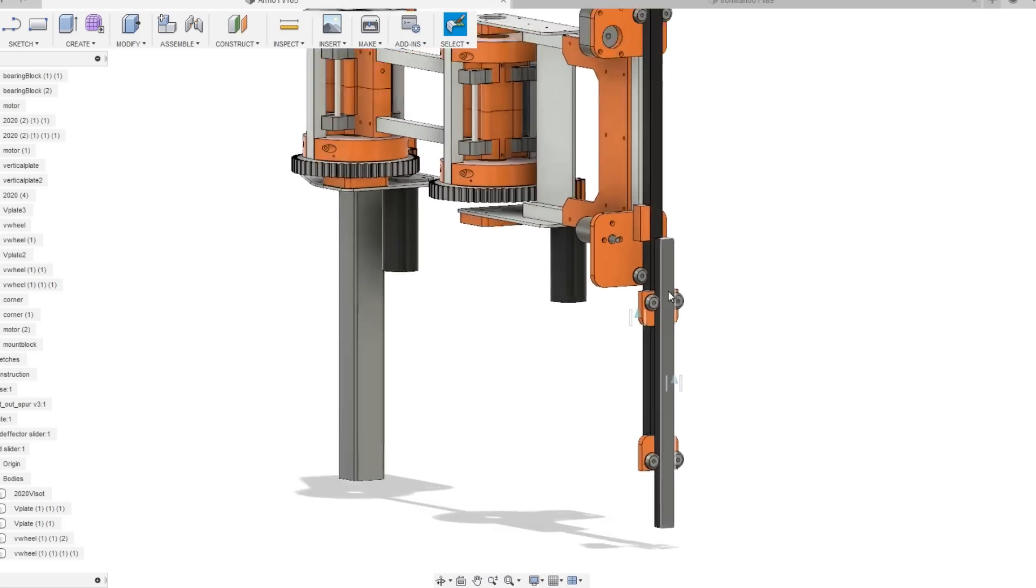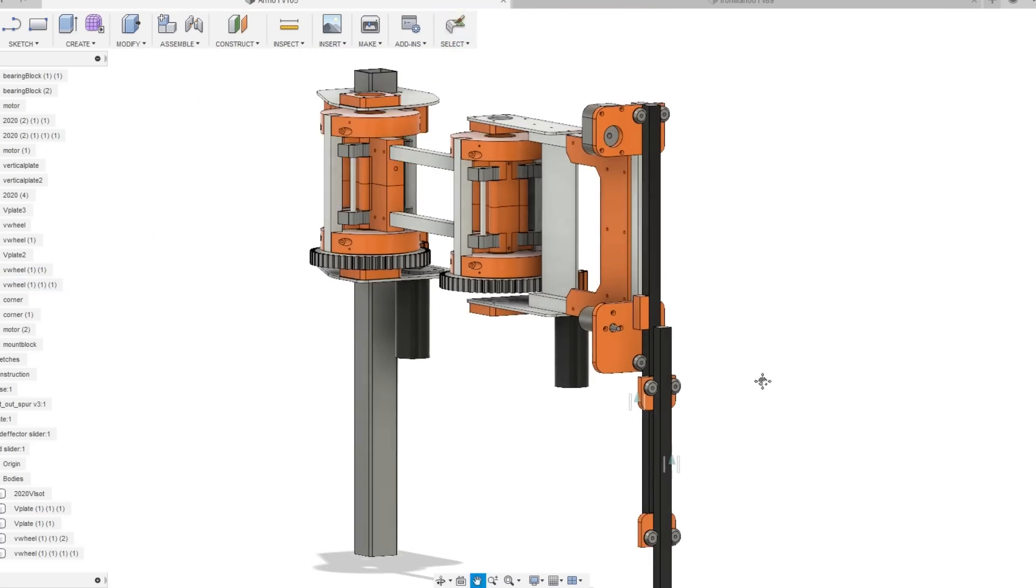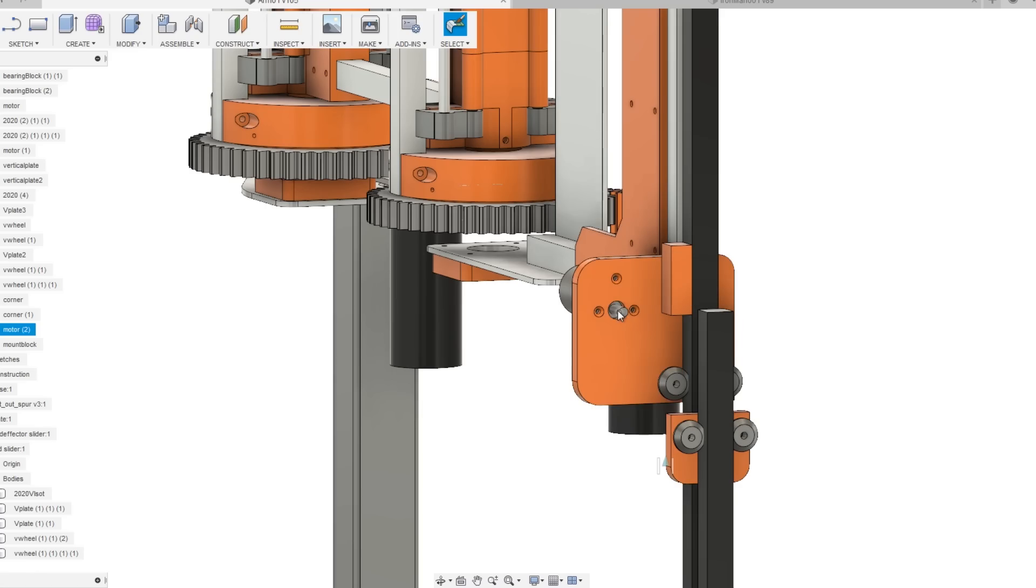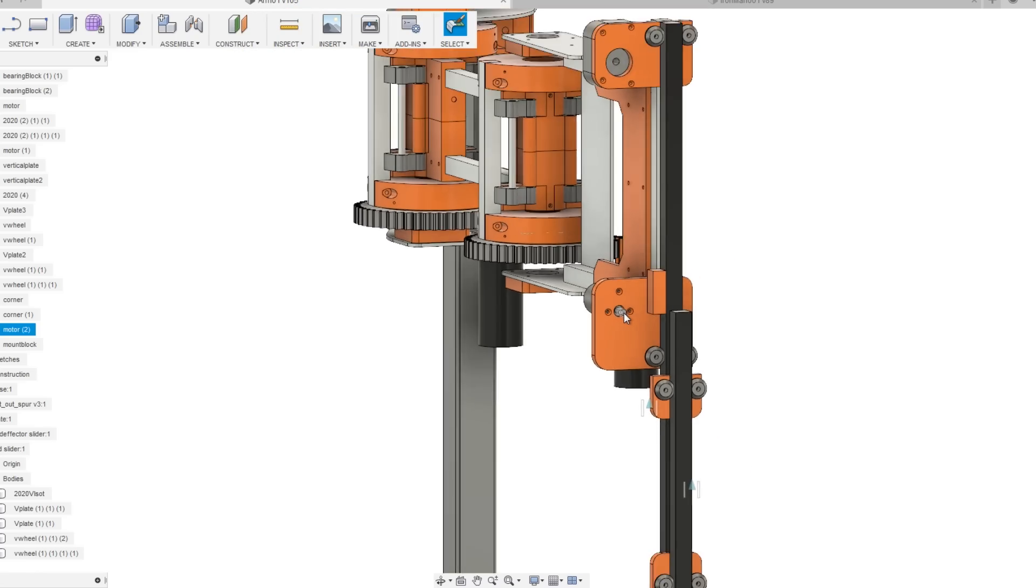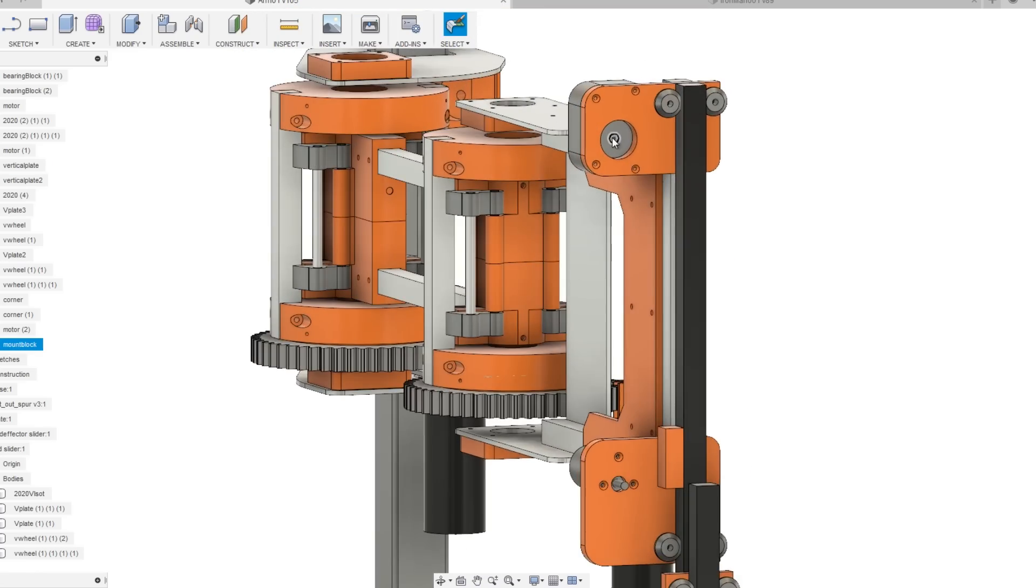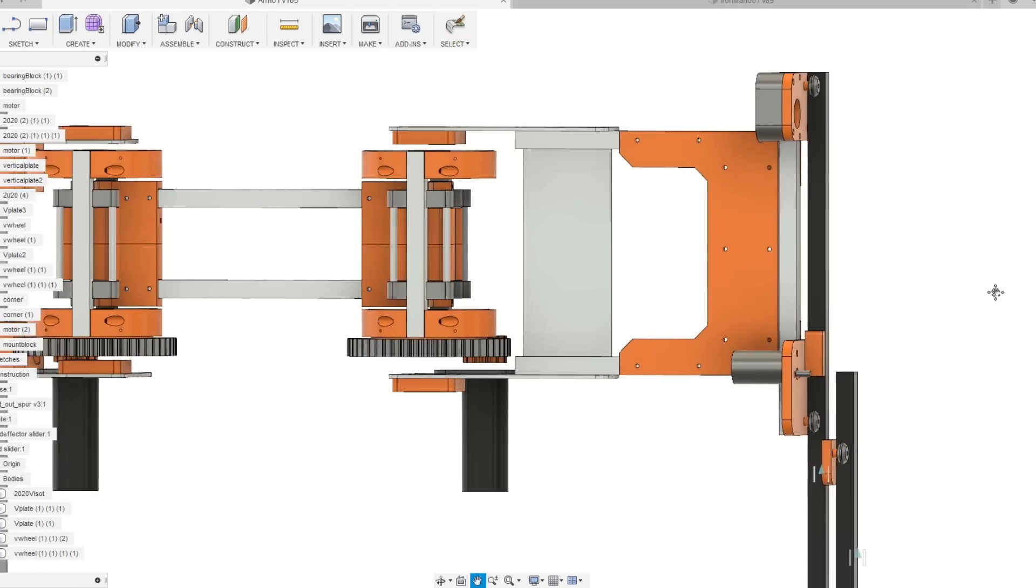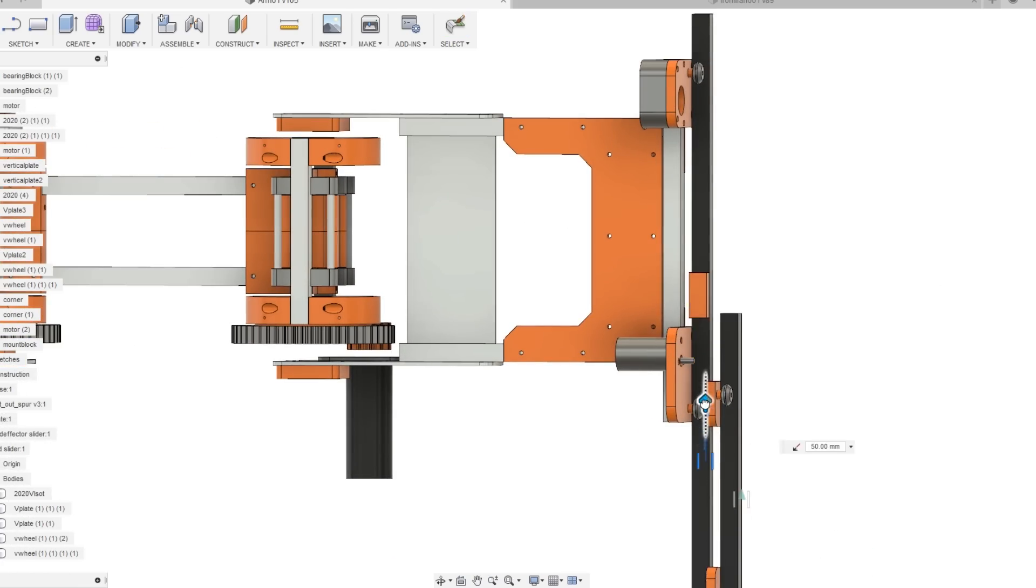Basically we've got two bits of V-slot extrusion, two stages with V-wheels, and we've got a motor mounted here which will have a pulley on. It should have a toothed belt, but I'm going to start with a piece of string, and there'll be a pulley mounted in the other end which is going to drive up and down the main axis. Let's print some parts and see what it looks like.